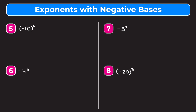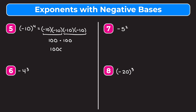Example 5: the quantity of negative 10 raised to the fourth power. This is the same as negative 10 times itself four times. Negative 10 times negative 10 gives a positive 100, because two negatives multiplied together turn into a positive, and my other negative 10 times negative 10 gives another 100. Multiplying 100 by 100, we add the four zeroes and get positive 10,000 as our answer.